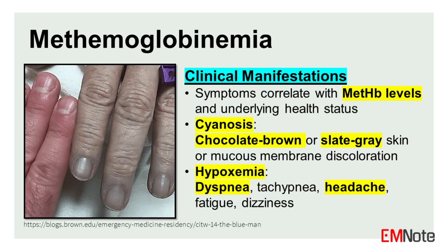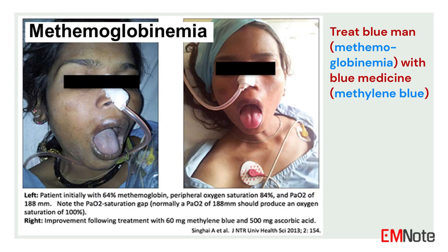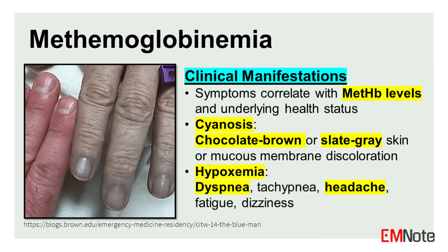Clinical Manifestations: The clinical presentation of methemoglobinemia is primarily related to the degree of functional anemia and resultant tissue hypoxia. Symptoms may vary depending on the methemoglobin level and the patient's underlying health status. Individuals with pre-existing cardiac or respiratory conditions may experience symptoms at lower methemoglobin levels.